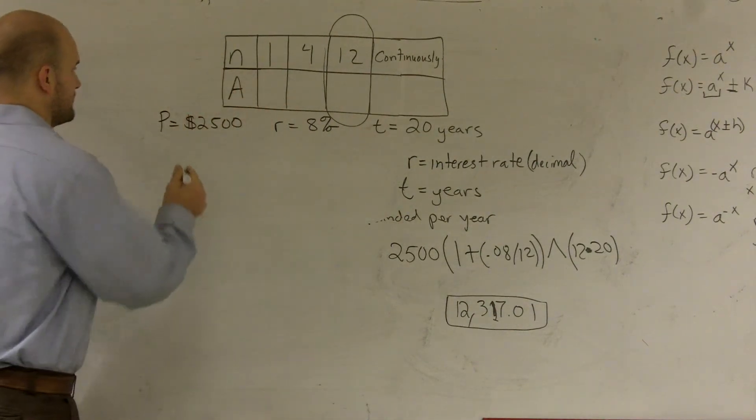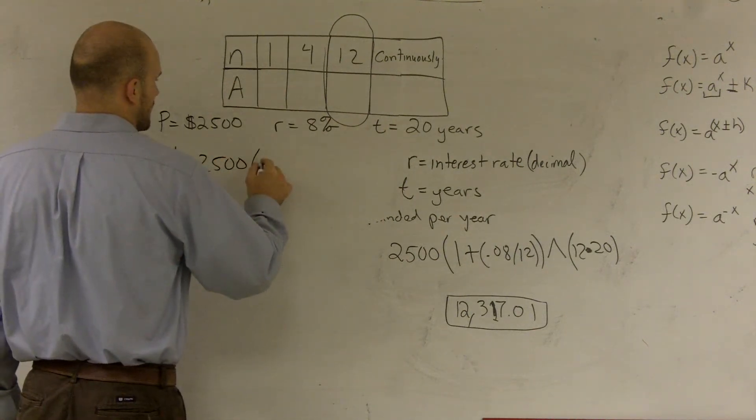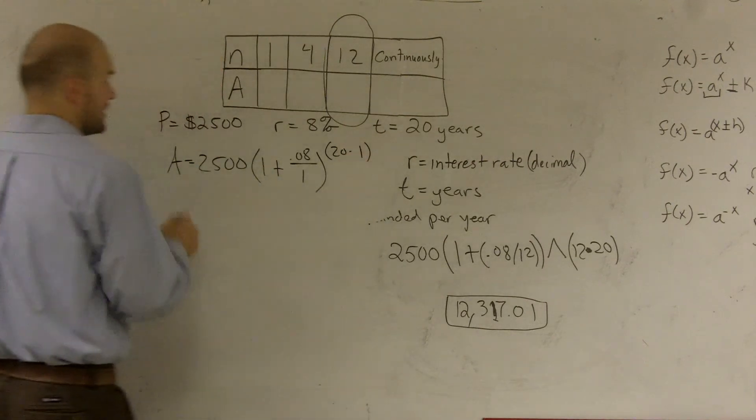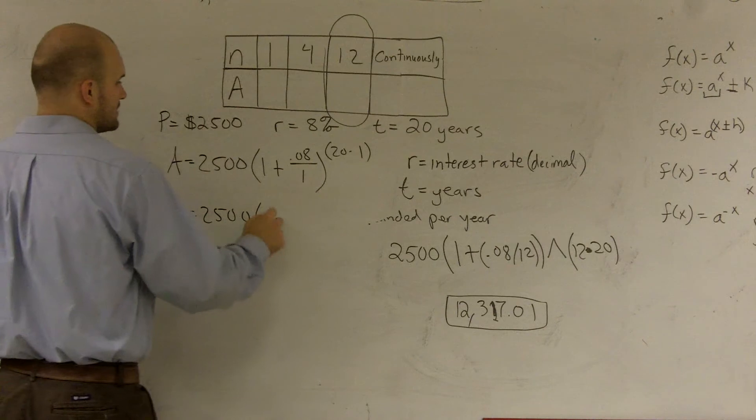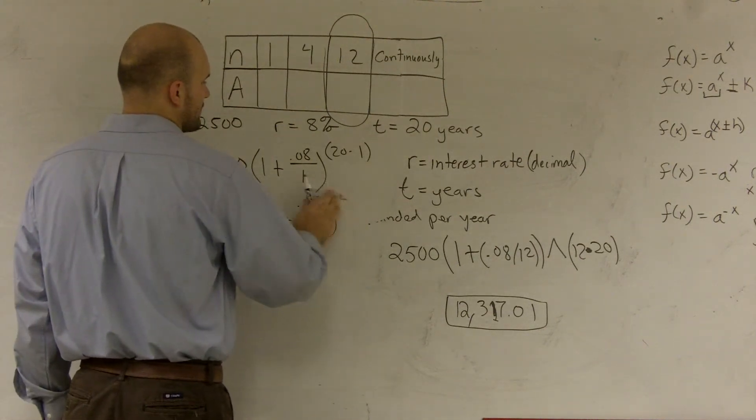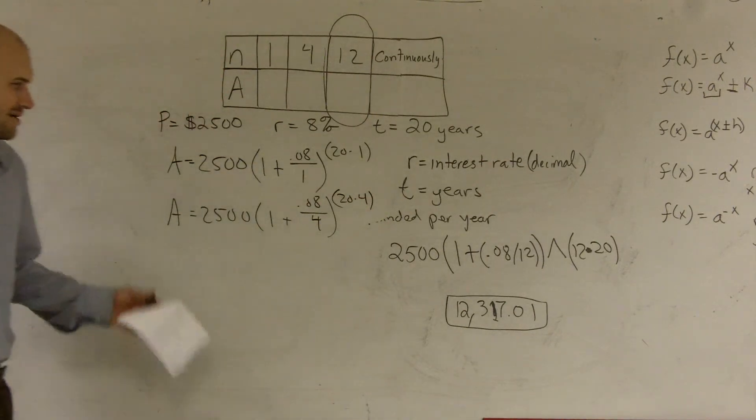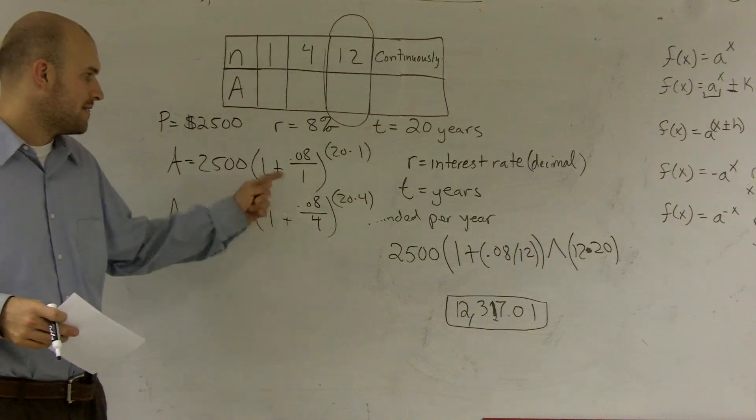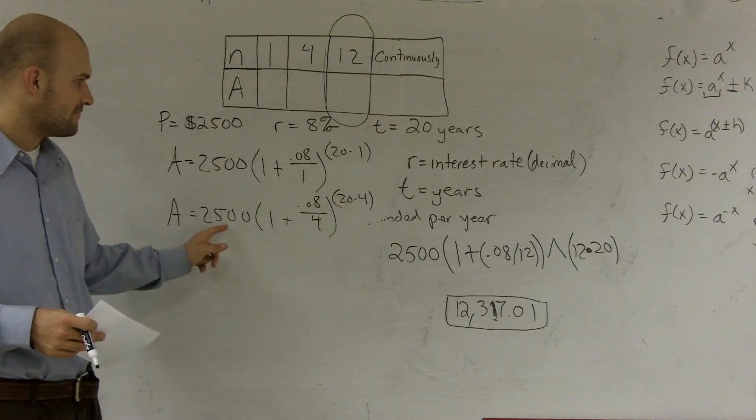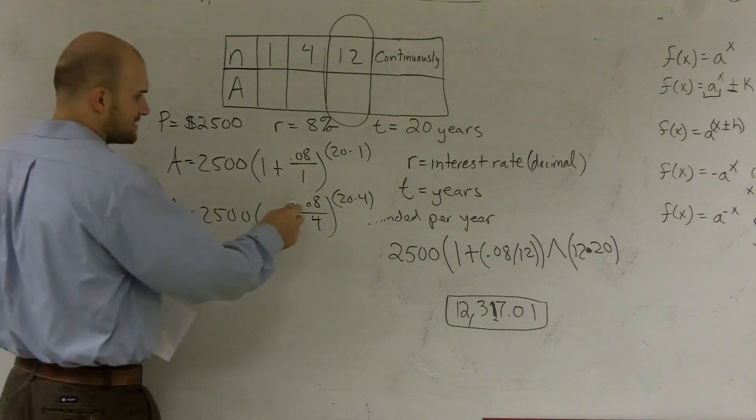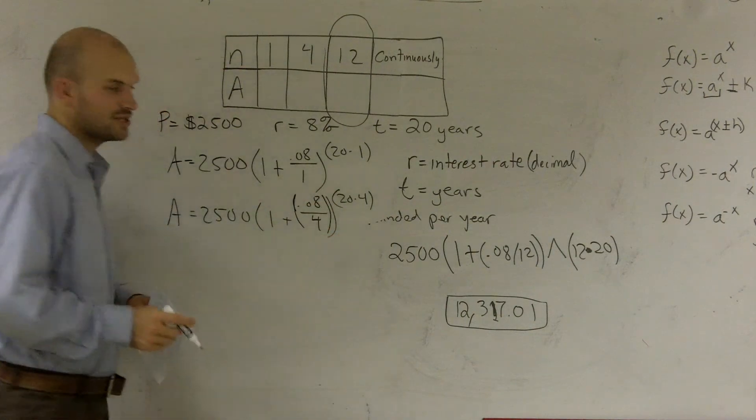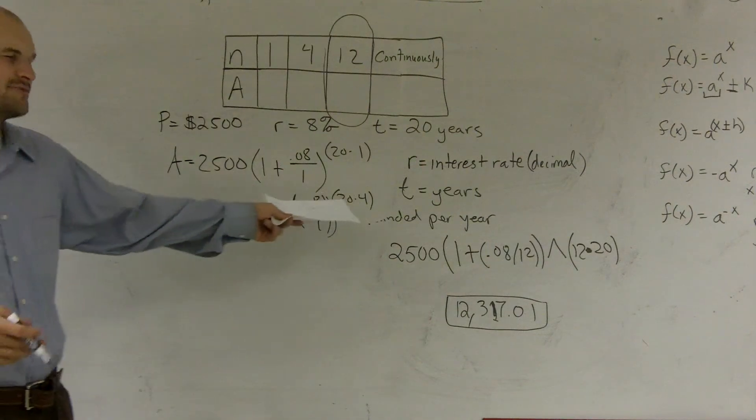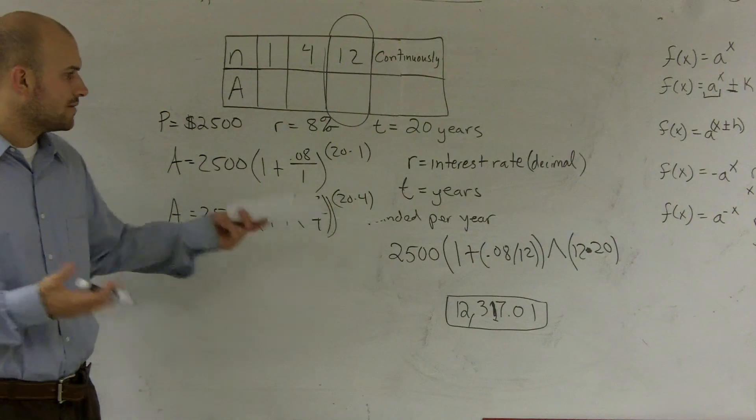Again, if I was just going to do this for quarterly or annually, all I would do is just do the exact same thing, but now I would just change it to 4 and 1. So I would just write A equals 2,500 times 1 plus 0.08 divided by 1, raised to the 20 times 1. And then for 4, I'd do A equals 2,500 times 1 plus 0.08 divided by 4 to the 20 times 4th power. Okay? So you see how it's very similar? The main important thing I just need to make sure you guys understand is just follow the order of operations. Do your division first, then add 1, then raise it to this power, then multiply it by 2,500.